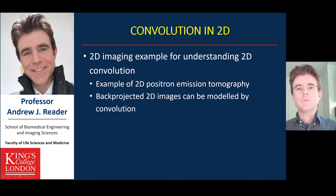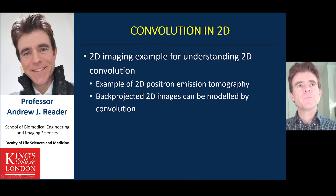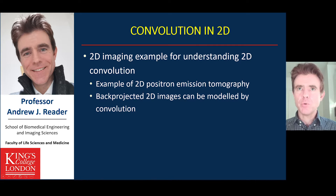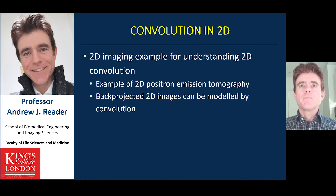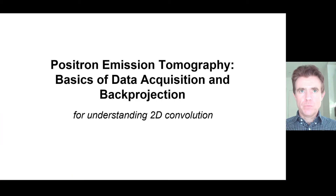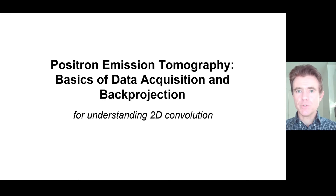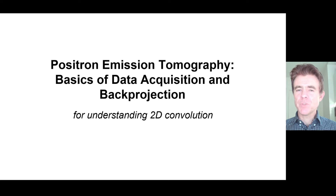In this section, I want to explain two-dimensional convolution and motivate it with a 2D imaging example from positron emission tomography. I'll cover the very basics of acquisition of data and then back-projection of that data, because this gives us a really clear understanding of two-dimensional convolution.